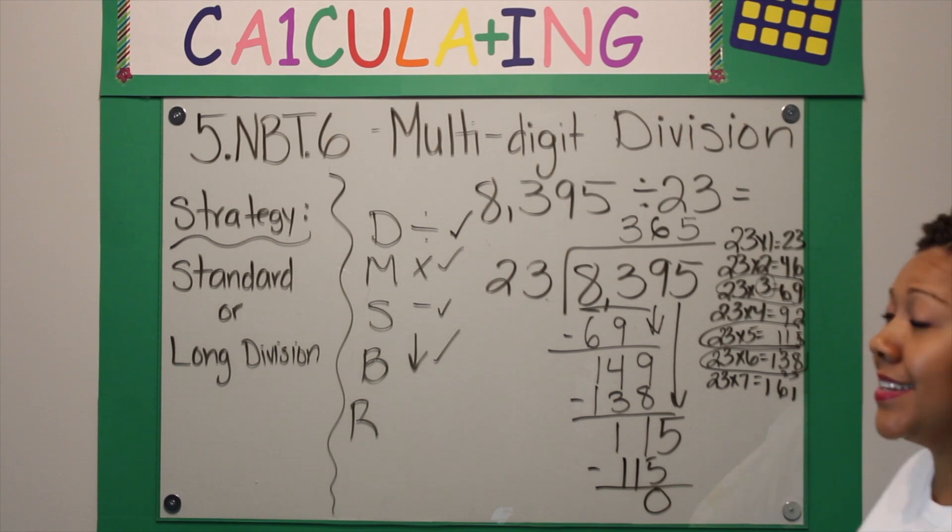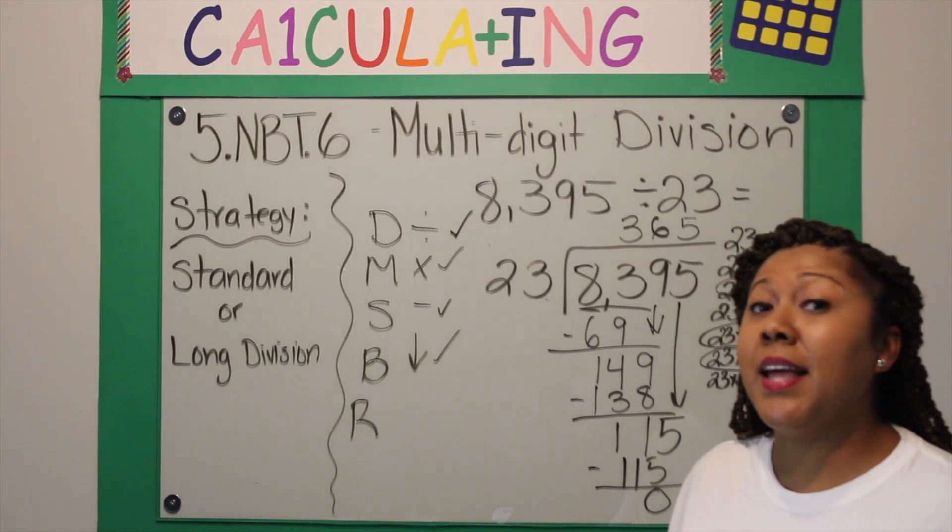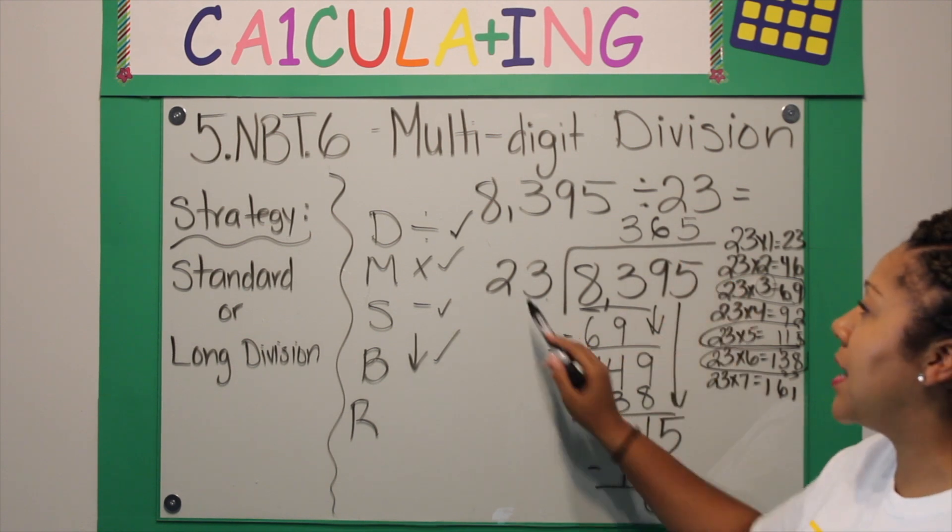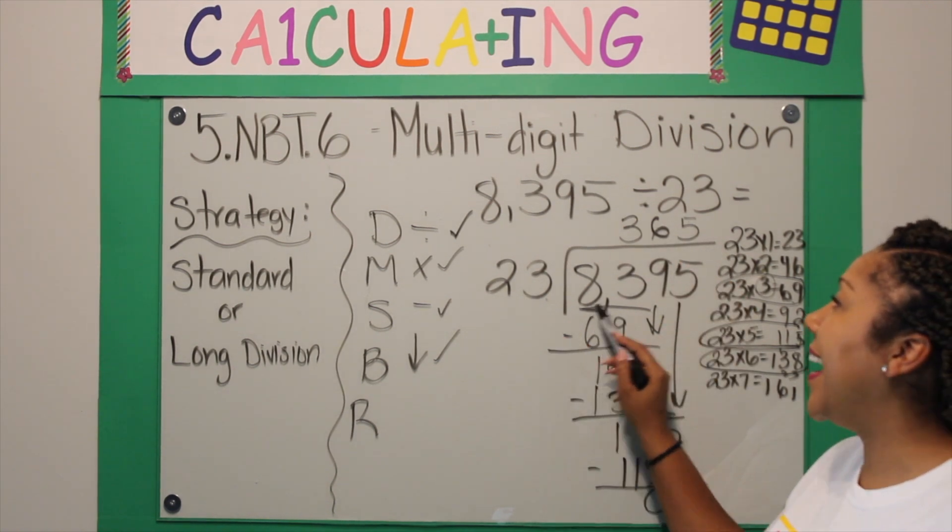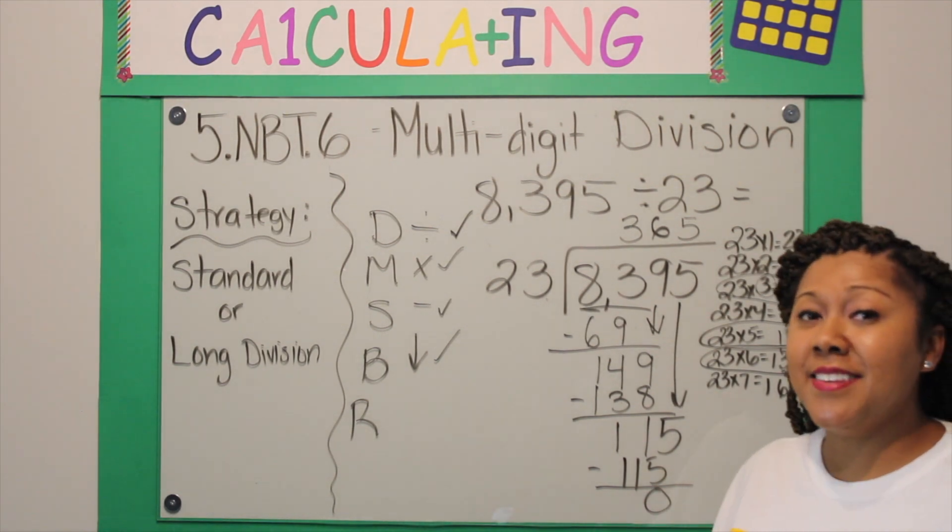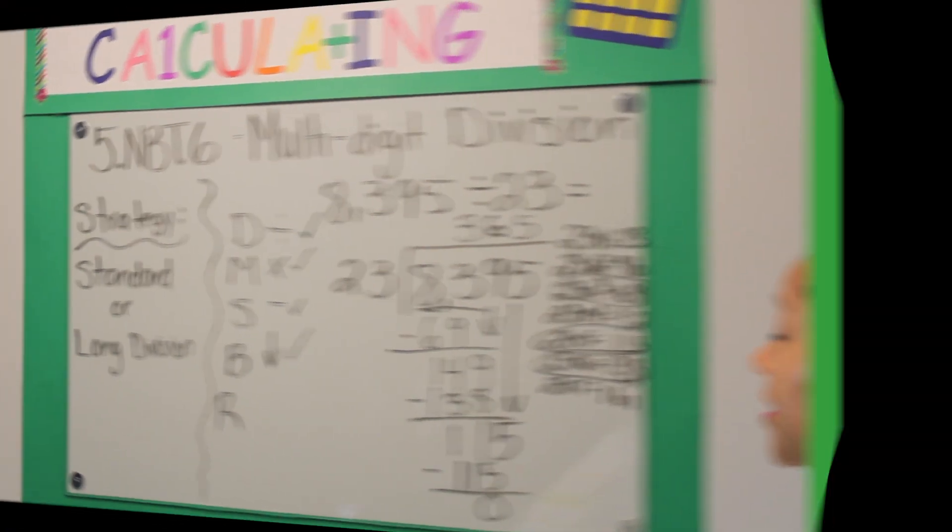So from the last problem you saw that when I multiply 365 times 23 I did get 8395. So multiplication and division go hand in hand - they are inverse operations.